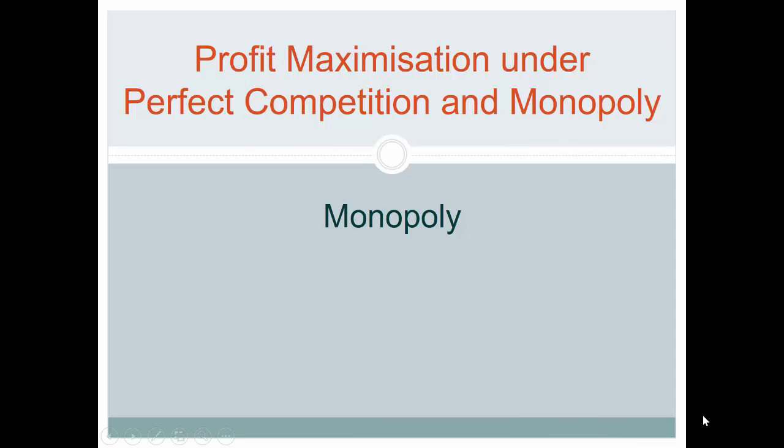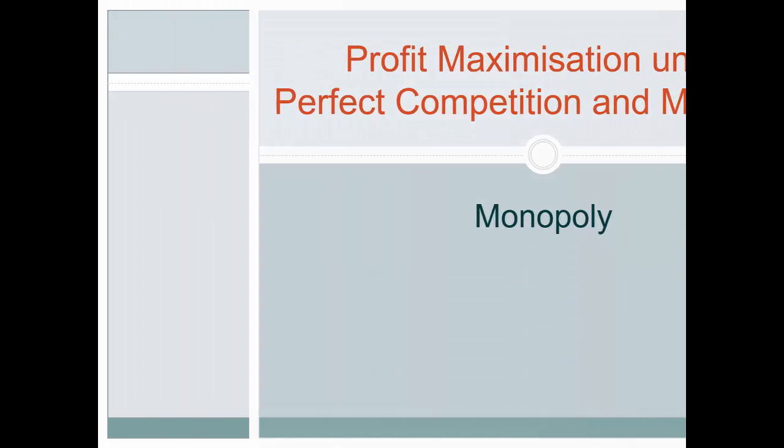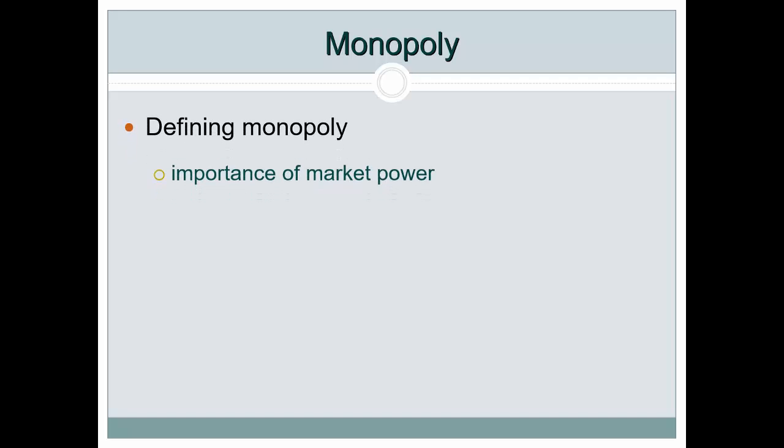This is a screencast on monopoly, the second concept we're covering this week. Monopoly is basically a case of a single firm dominating the whole industry. The key to the definition is market power — the single firm has the power of controlling its prices and demand for its product. For practicality, let's define a monopoly as a company with a market share of between 75 to 100%.